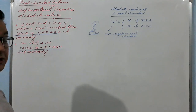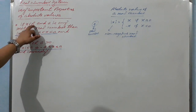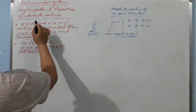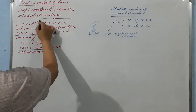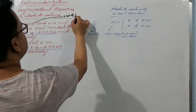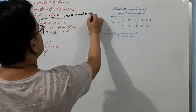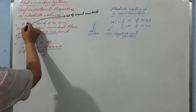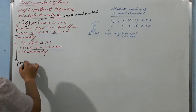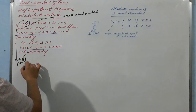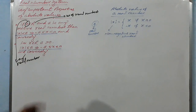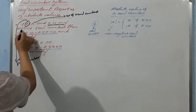Let's see the statement of the properties. If X belongs to R — R means the set of real numbers — then X is any real number. And let 'a' be any positive real number.